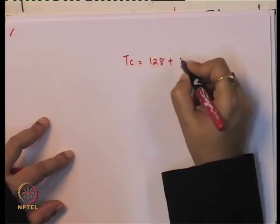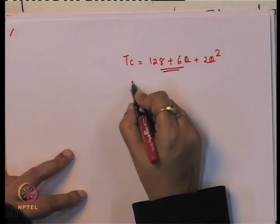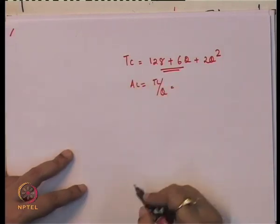Optimal output is that level of output which minimizes the average cost of production, since here we are fitting the optimal output taking average cost as the reference. We will take an example using a typical cost function to find the optimal output level empirically. If the cost function is TC = 128 + 6Q + 2Q², then average cost is TC divided by Q, which gives AC = 128/Q + 6 + 2Q.